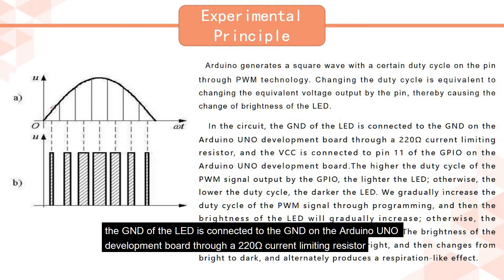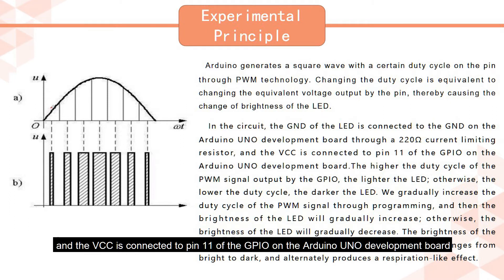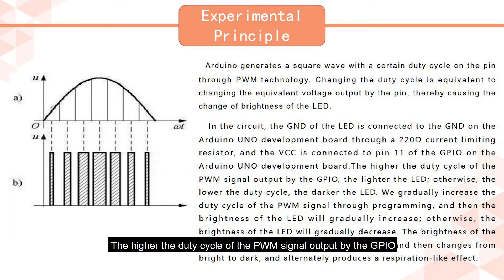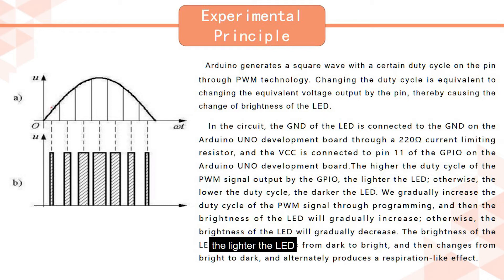In the circuit, the GND of the LED is connected to the GND on the Arduino UNO Development Board through a 220 ohm current limiting resistor, and the VCC is connected to pin 11 of the GPIO on the Arduino UNO Development Board. The higher the duty cycle of the PWM signal output by the GPIO, the brighter the LED.